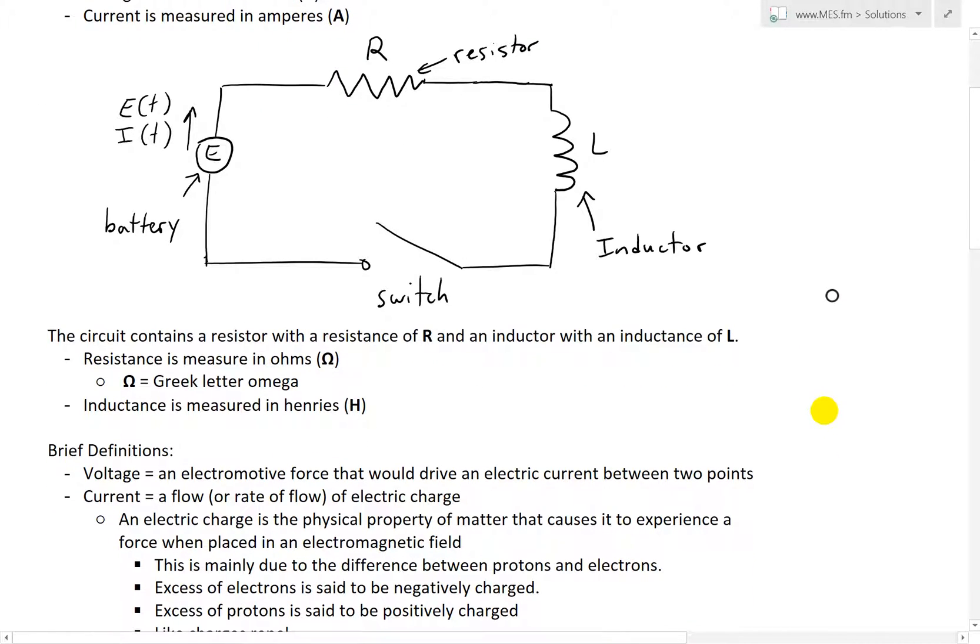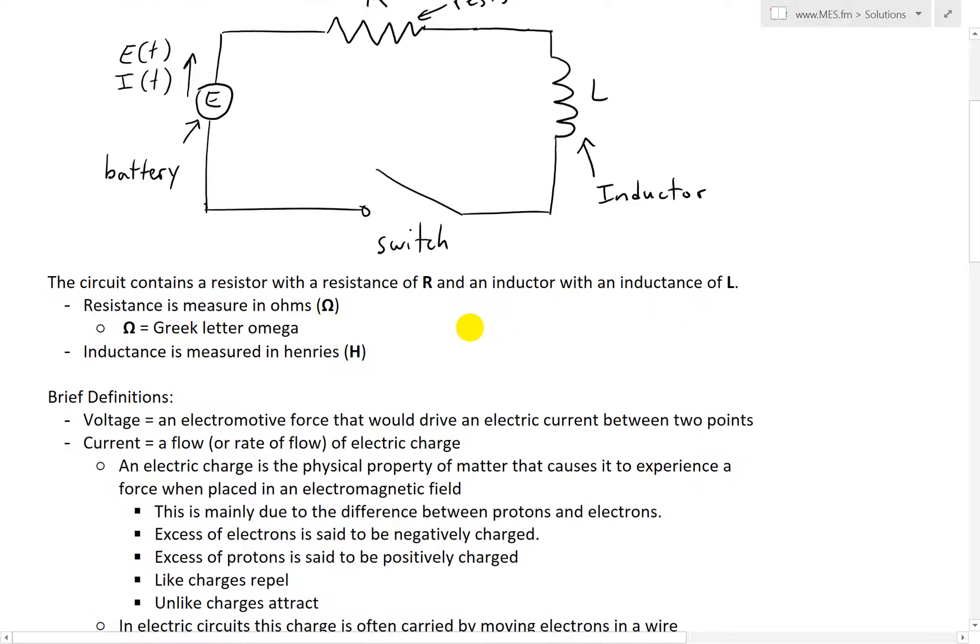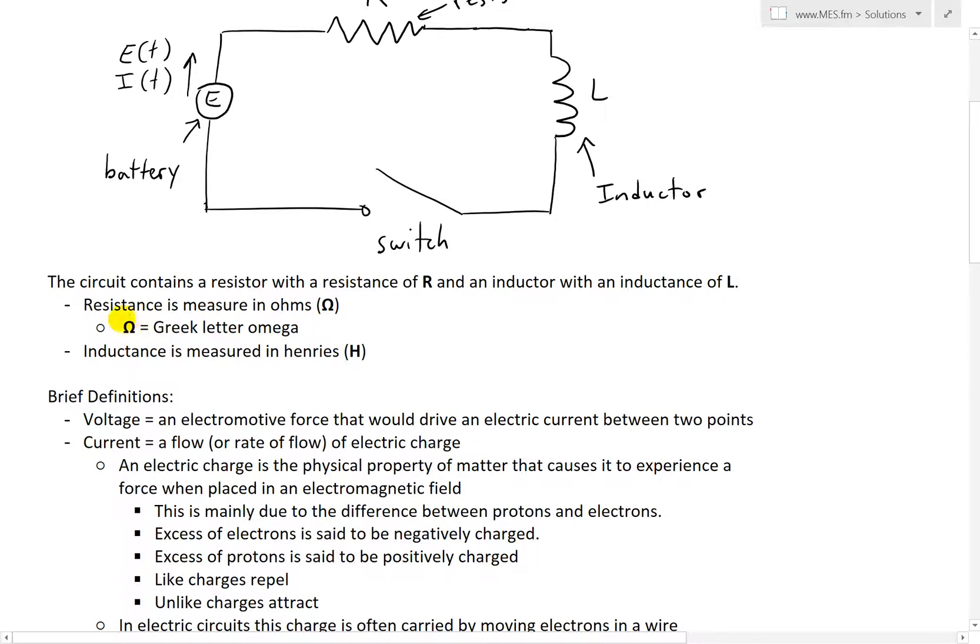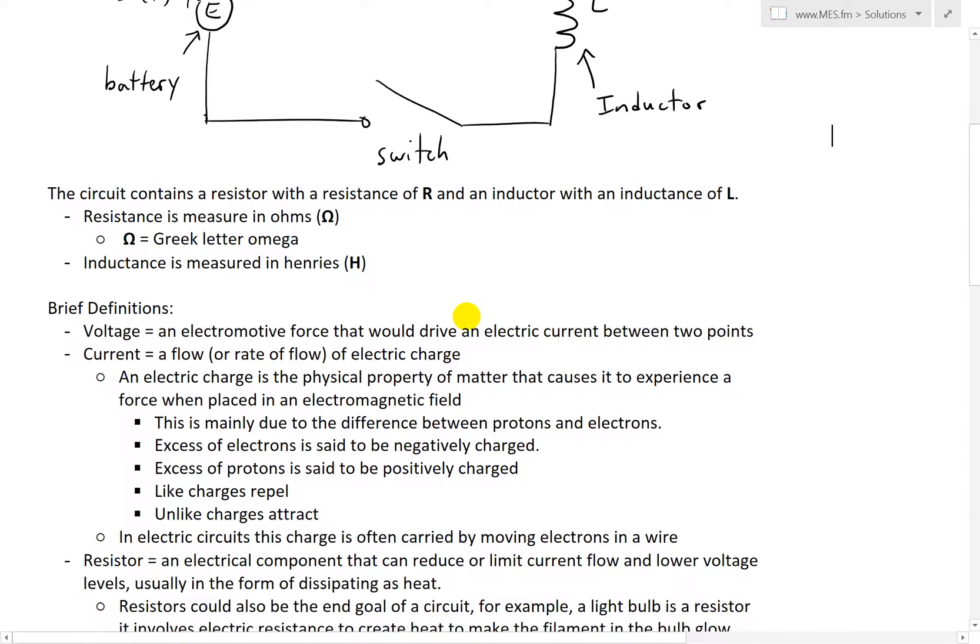This circuit contains a resistor with a resistance R and an inductor with an inductance L. Resistance is measured in ohms, with this Greek letter omega, and inductance is measured in Henrys, with a capital H.